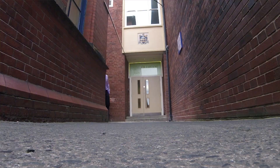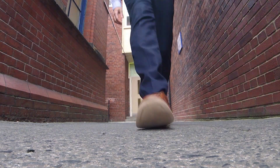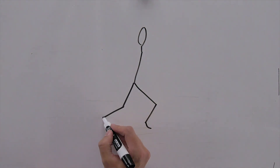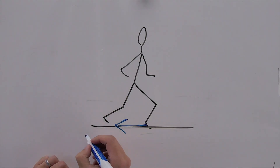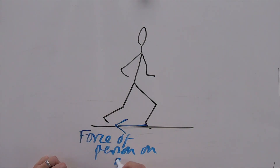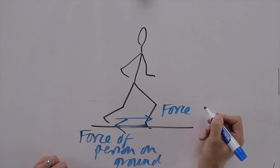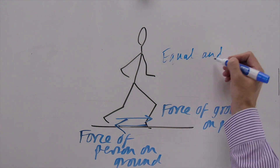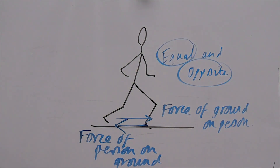Now let's look at friction in a bit more detail. Have you ever thought about how you manage to walk forwards? When you're walking forwards, you need to feel which way you're pushing on the ground. As you try to go forwards, you should feel that you're pushing backwards on the ground. As you push backwards on the ground, the ground pushes with an equal and opposite force on you — forwards. So it's two objects interacting: you and the ground. Equal and opposite forces: you push backwards, the ground pushes forwards on you.